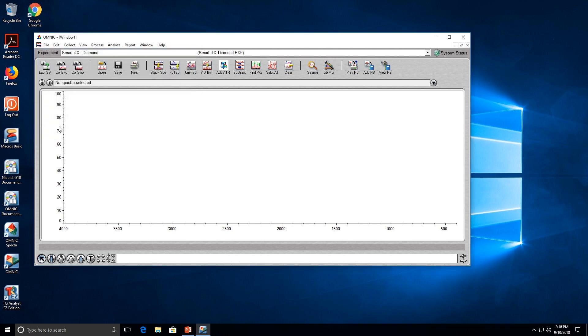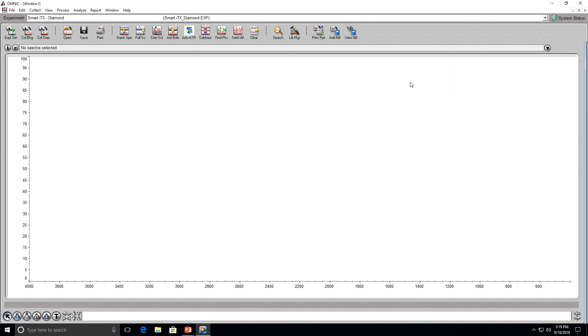Next make sure that there is a green check mark in the top right corner. If there is the system is ready to go. Now you can go ahead and hit the collect background button.